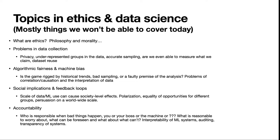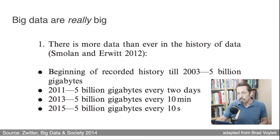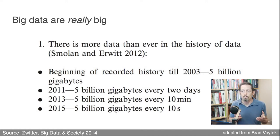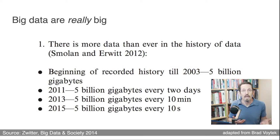Big data are really, really big. This paper from 2014 was already showing an incredible progression: up until 2003, all of society had collected maybe five billion gigabytes of data. And as we went into 2015, we were starting to generate that same amount — all of humanity's data up to 2003 — every ten seconds or so. And this problem is only getting worse.